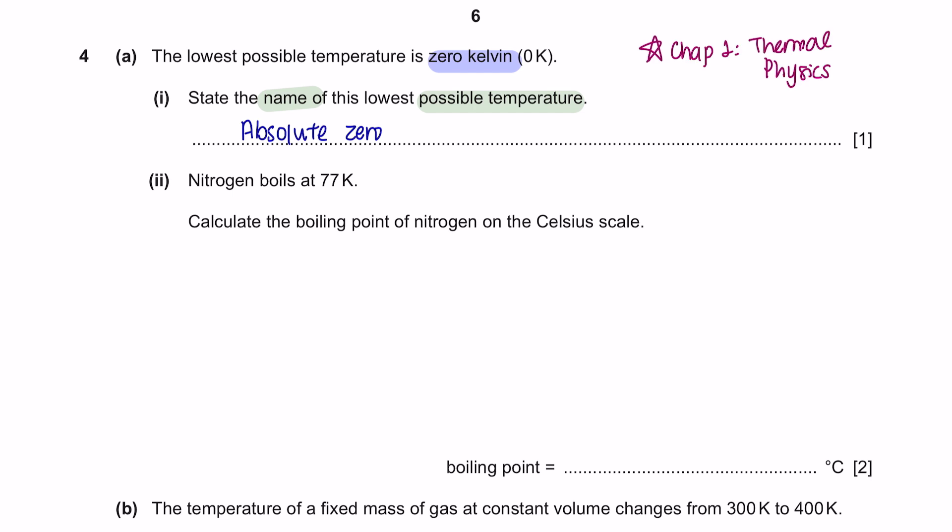Part 2. Nitrogen boils at 77 Kelvin. Calculate the boiling point of nitrogen on the Celsius scale. The important thing that you should know is 0 degree Celsius is equivalent to 273 Kelvins, and 0 Kelvin is equivalent to negative 273 degree Celsius. So now let's use this information to convert Kelvin into Celsius. So the value of Kelvin here is 77, take away 273, we will get a value of negative 196 degree Celsius.